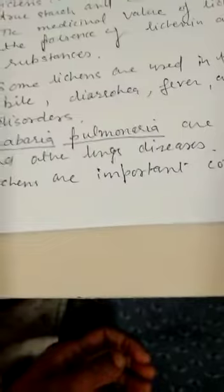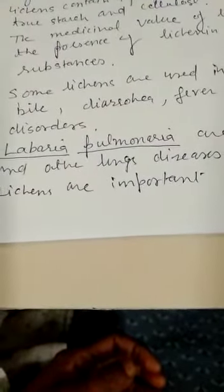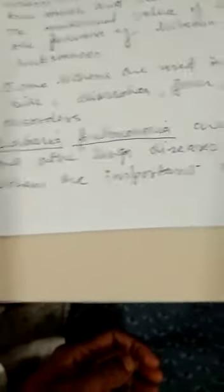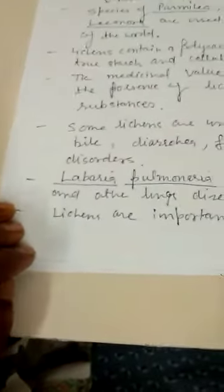They are the first plants to survive on dry bare rocks. Species of Parmelia, Embalicaria and Liconera are used as food in many parts of the world. Lichens contain a polysaccharide lichenin but lack true starch and cellulose.